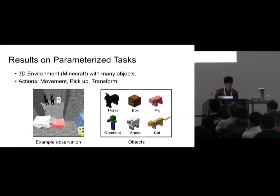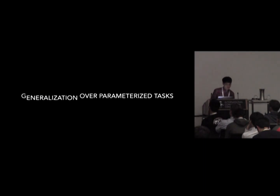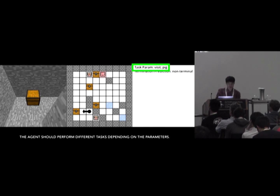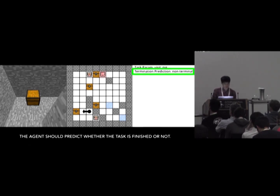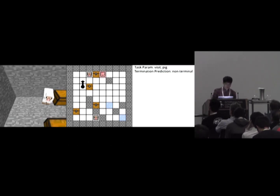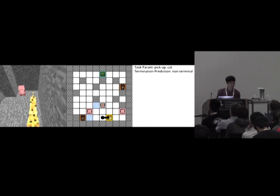We demonstrated this idea on a 3D environment where the agent can interact with many different types of objects. The action space consists of movement actions and special actions like pickup and transform for interaction with objects. This video shows our agent's play on the parameterized task. The left is the observation and the figure in the middle is the top-down view image. The agent has to perform different tasks depending on the given task parameters and predict when the task is finished. Given 'visit peak', the agent looks for the peak and goes on top of it to finish the task.